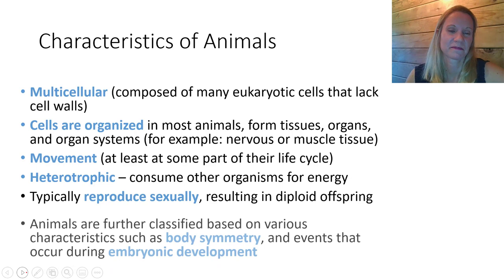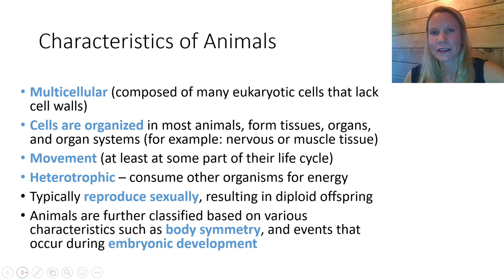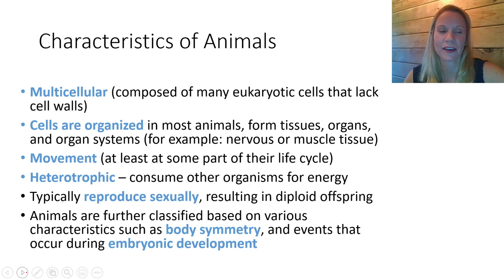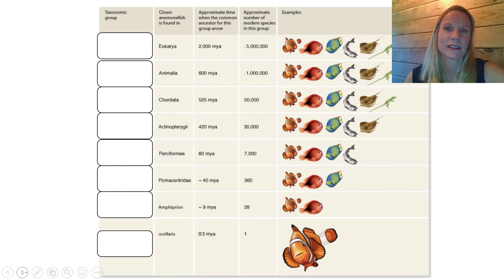In this video, we're going to learn about animal classification and how we name living things in biology. Animals are classified further by their body symmetry, as well as certain key events that occur during their embryonic development. First, let's talk about the taxonomic hierarchy that we use in biology. This is a classification grouping system that is recognized among all biologists all over the world.